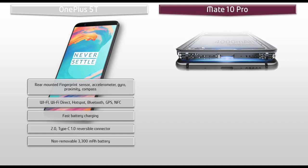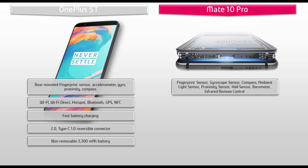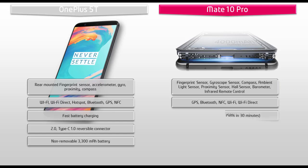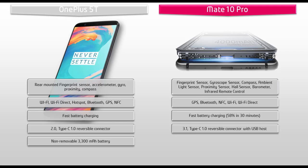Whereas the Huawei Mate 10 Pro comes with a fingerprint sensor on the back panel and includes gyroscope sensor, compass, ambient light sensor, proximity sensor, hall sensor, barometer, and infrared remote control. This phone also comes with GPS, Bluetooth, NFC, Wi-Fi, Wi-Fi Direct, fast battery charging at 58% in 30 minutes, Type-C reversible connector with USB host, and an embedded 4000 mAh non-removable battery.